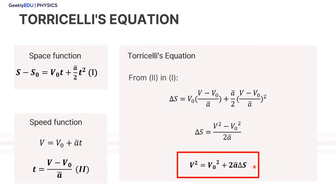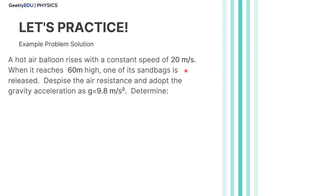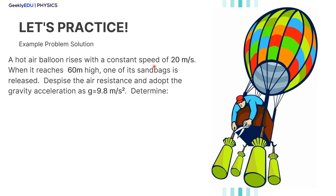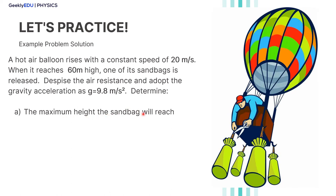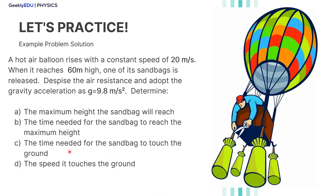This equation does not depend on the time variable, and it's very, very useful. Now let's practice with this example problem. Imagine a hot air balloon rising with a constant speed of 20 meters per second. When it reaches 60 meters high, one of its sandbags is released. Neglecting air resistance and adopting a gravity acceleration of 9.8 meters per second squared, we need to determine: A) the maximum height the sandbag will reach, B) the time needed to reach maximum height, C) the time needed for the sandbag to touch the ground, and D) the speed at which it touches the ground.